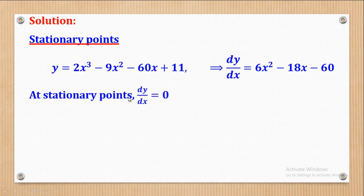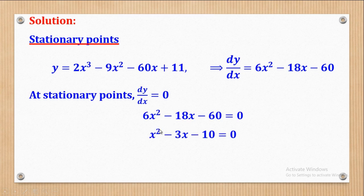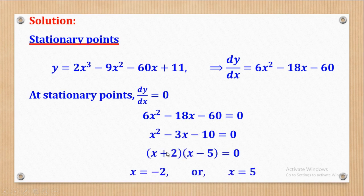At stationary points, the first derivative is equal to 0. So equating to 0, I can reduce by 6. Factorizing gives (x + 2)(x − 5) = 0. So x + 2 = 0 gives x = −2, and x − 5 = 0 gives x = 5.